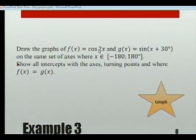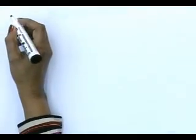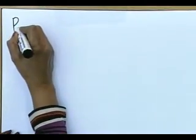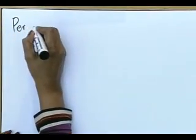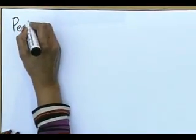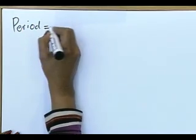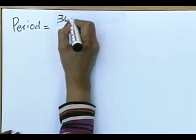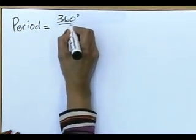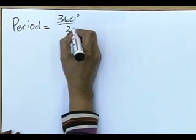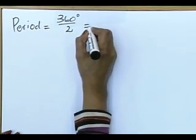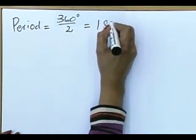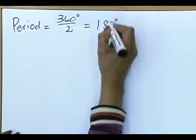Let's work it out and calculate our period. We said our period must be equal to 360 degrees divided by 2, which gives us 180 degrees.